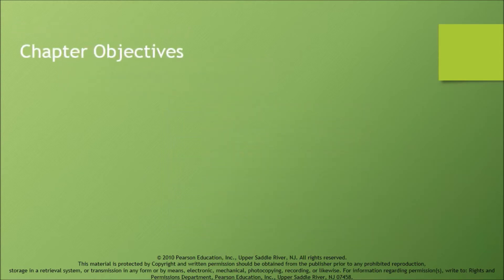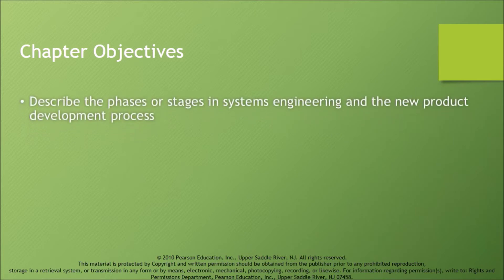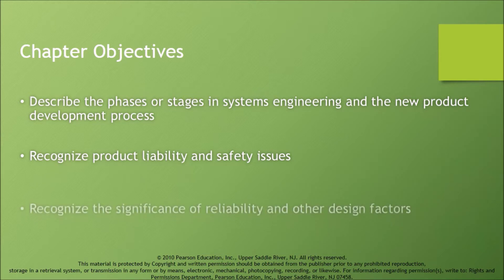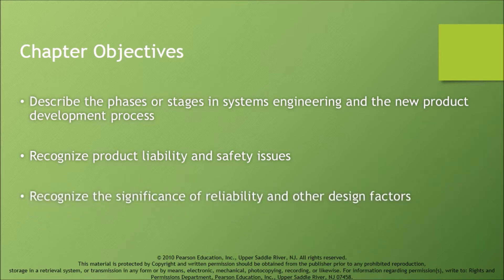Chapter Objectives: Describe the phases or stages in systems engineering and the new product development process. Recognize product liability and safety issues. Recognize the significance of reliability and other design factors.